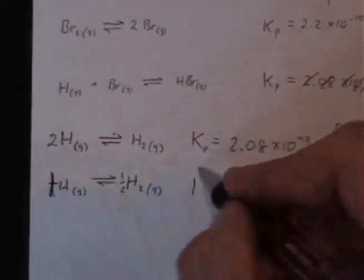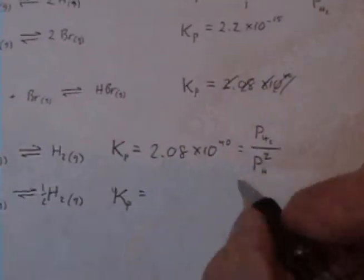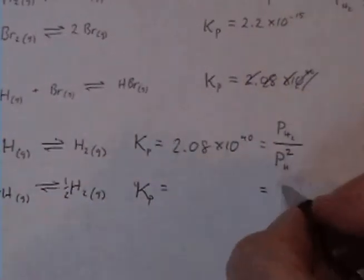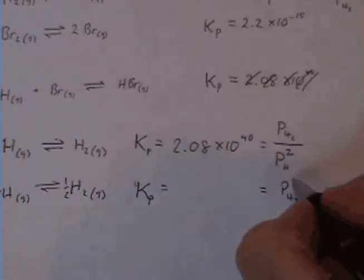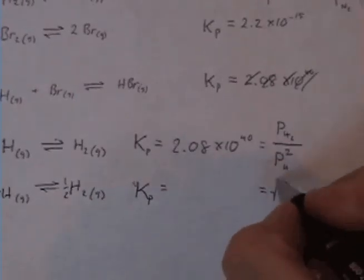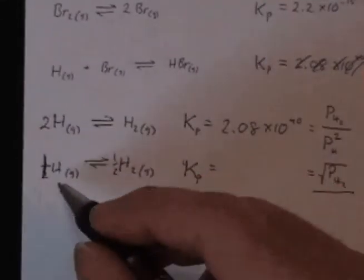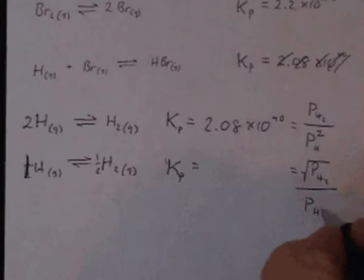Okay, now if I write the Kp for this, I'll go ahead and put it here. It's going to be the pressure of the hydrogen gas raised to the one half power. I'll go ahead and write that as a square root divided by the pressure of the hydrogen.